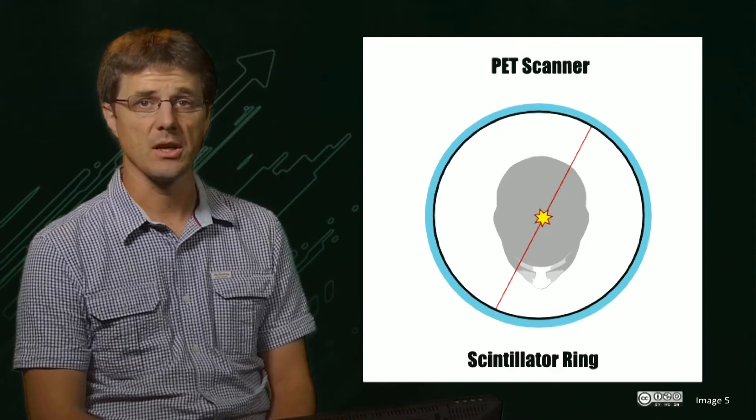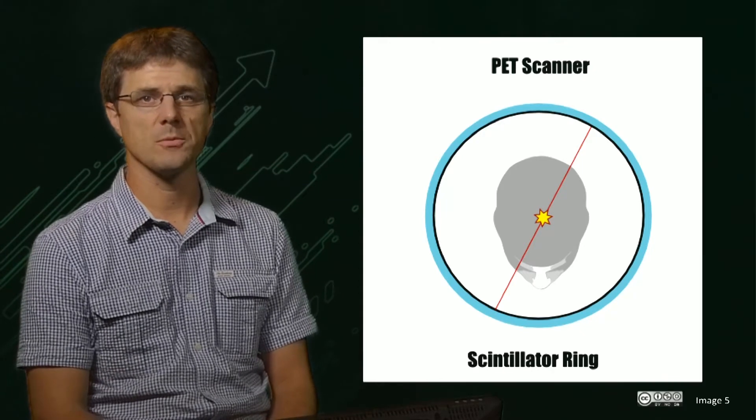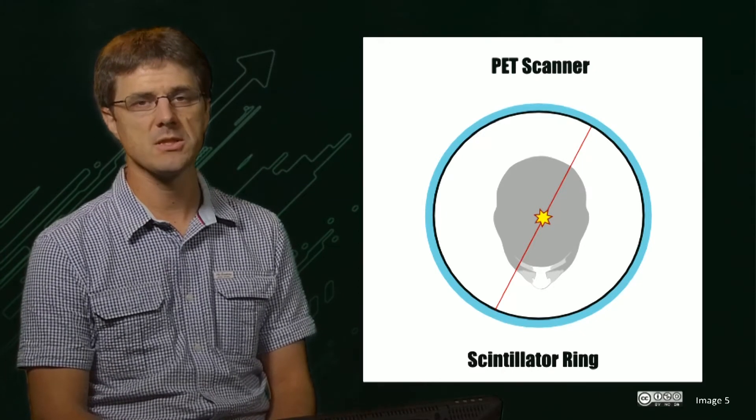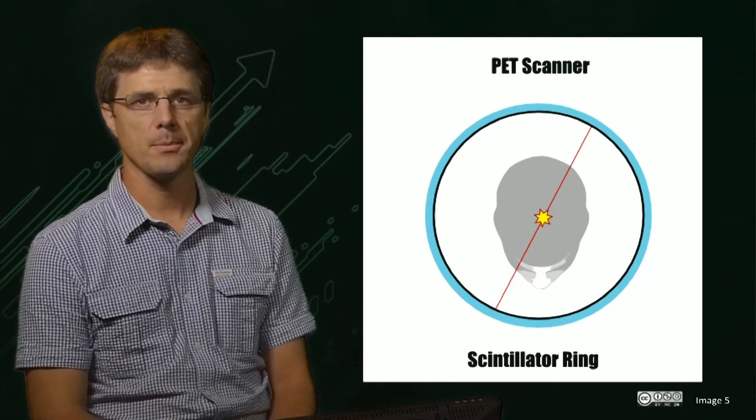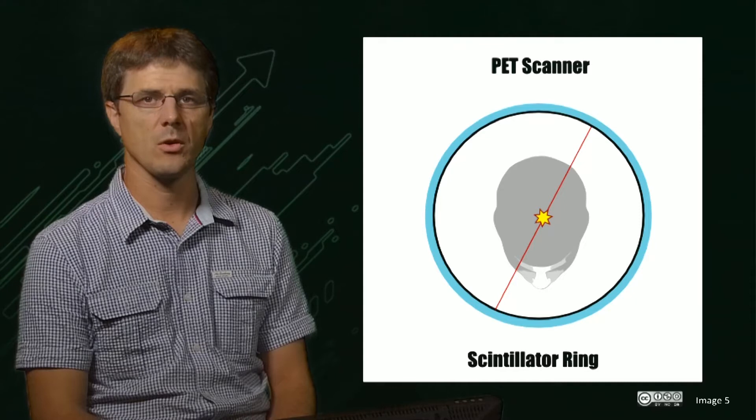Given their velocity, irrespective of their location in the object, these two positrons will hit the detected ring at essentially the same time. When this happens, the scanner records what is called a coincidence event.